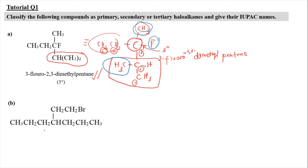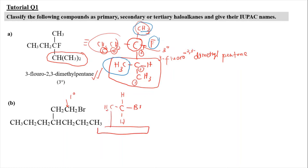Now for structure B, we're going to identify the haloalkane. For the classification of this carbon, it's going to be a primary haloalkane because this carbon here is attached with hydrogen and then attached with CH2, and here is the long carbon chain. So this carbon is only attached with one alkyl group, and therefore it is a primary haloalkane.